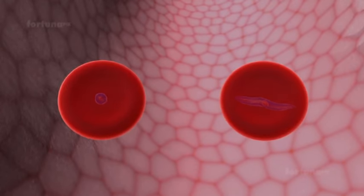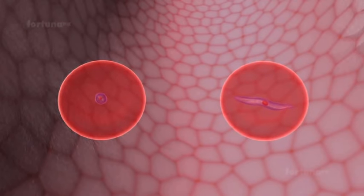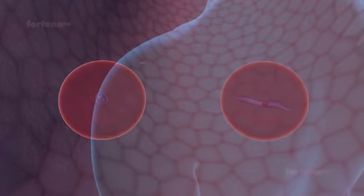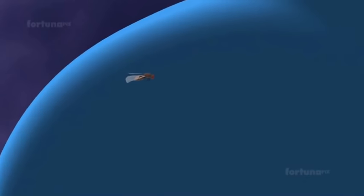Which will not develop any further in the Red Blood Cells and will not rupture the cells. Now, let's see how the Parasite completes its Life Cycle in the Mosquito.